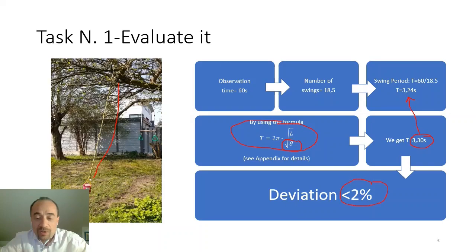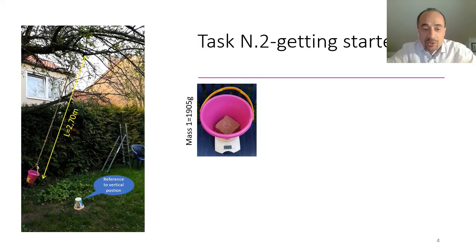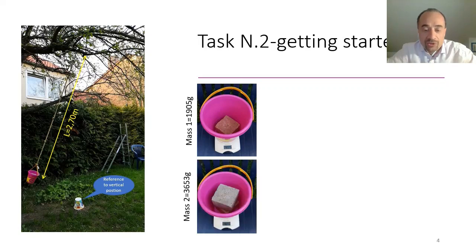We are within a deviation of 2%. In the second part of the experiment, always using the same pendulum but with a different task to measure the behavior by damping. One mass 1.9 kg and the second mass 3.6 kg.